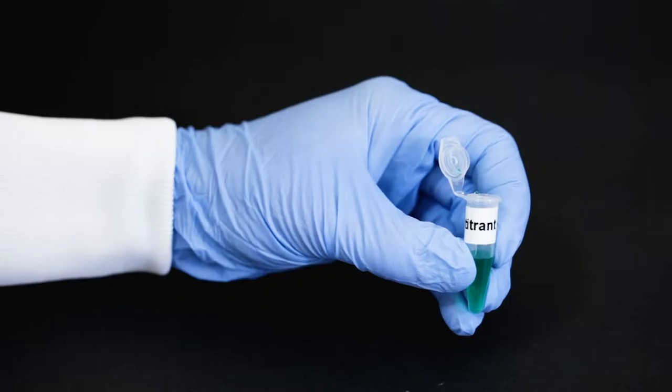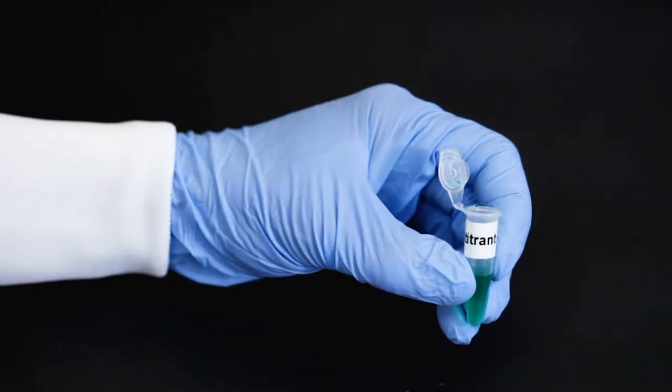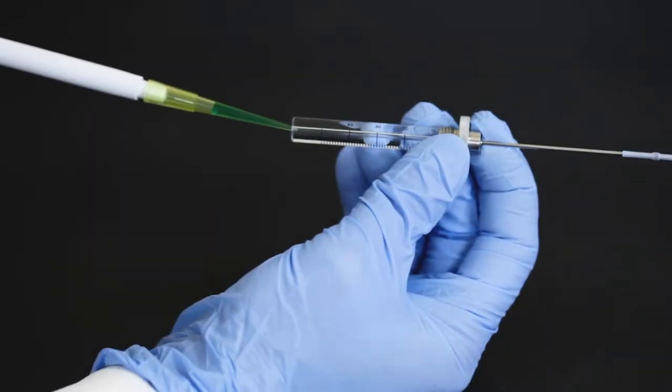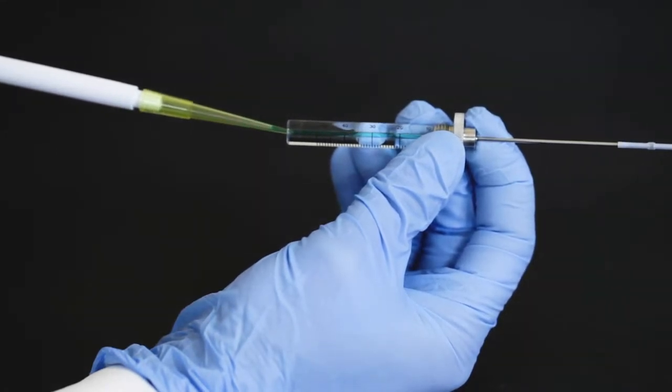After this, a sufficient volume of titrant is drawn up into the micropipette. This solution is backloaded into the injection syringe. For this type of load, it is important to keep the injection syringe horizontal.